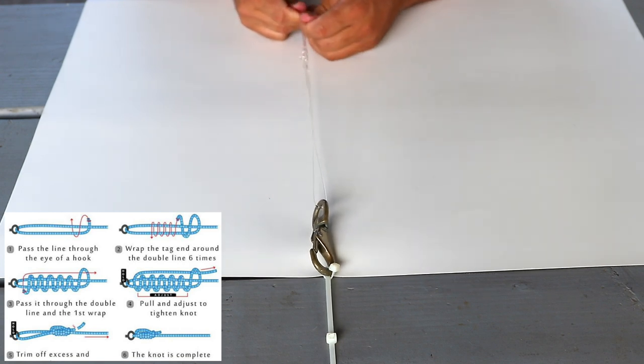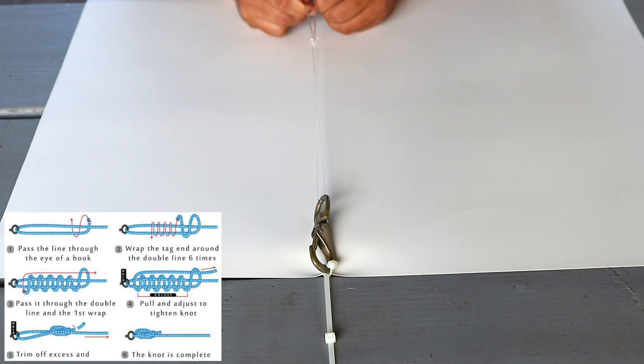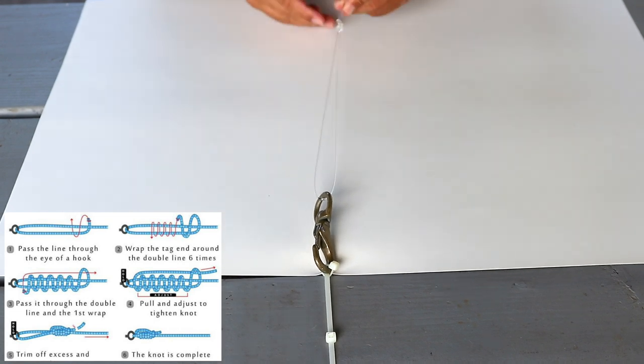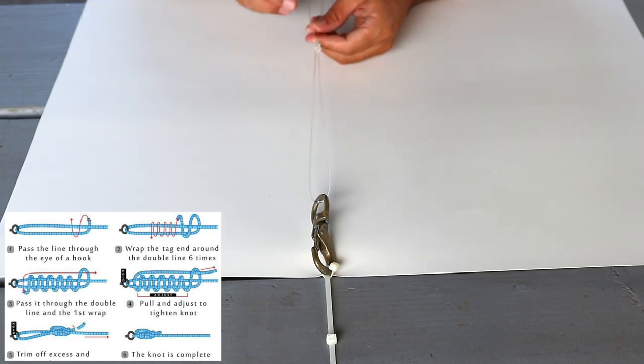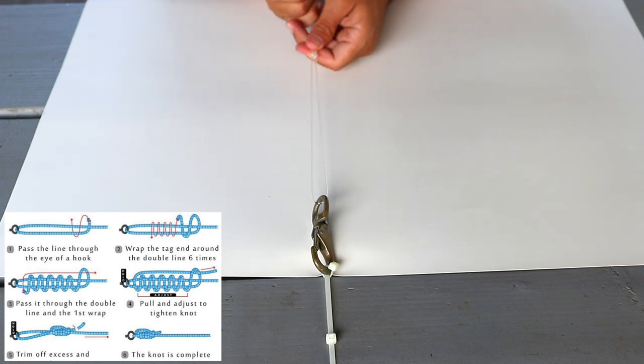With that loop through, we're going to pull the tag end slowly, pull both pieces of the line, kind of cinch on that knot. What you want is you want to lubricate the line, either by wetting it, licking it, or just getting it wet so it doesn't burn your line when you slide it down.